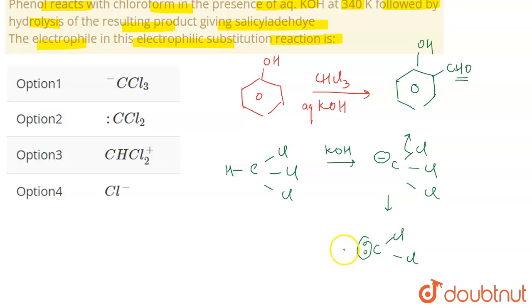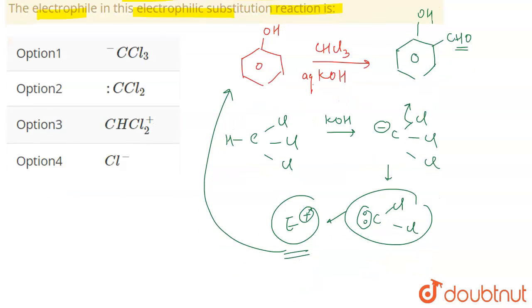We get CCl2 with a lone pair and this is actually the electrophile. This is the electrophile that is used in this reaction which is the Reimer-Tiemann reaction.